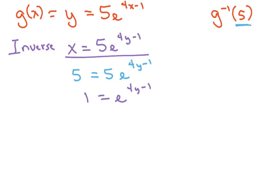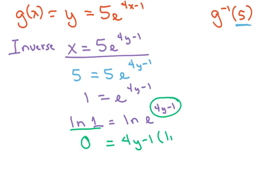Now I'm going to take the natural log of both sides to get ln of 1 equals ln of e to the 4y minus 1. Well, ln of 1 is 0. And then I'm going to use my power property and bring that in front times ln of e. Ln of e equals 1.